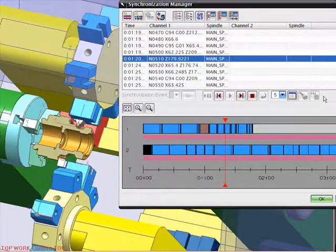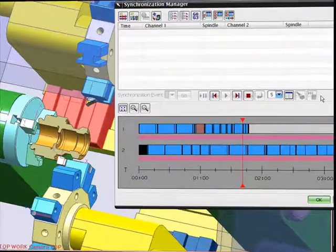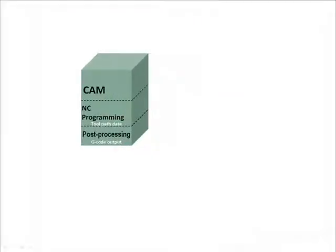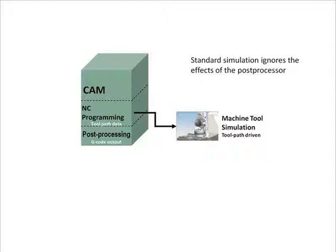Machine Tool Simulation can look impressive with advanced shading and other graphics. However, in most CAM systems the motion of the 3D display models is driven off of the internal toolpath and not from the output of the post processor. This form of basic toolpath-driven simulation is useful for simple review of a machining strategy but is not complete or accurate enough for full NC program validation.